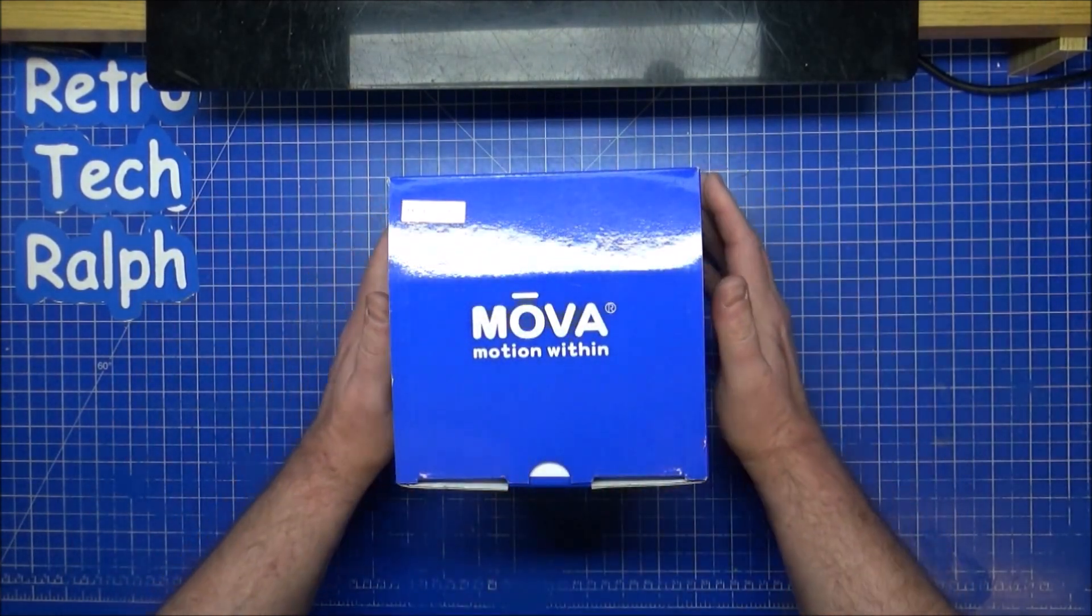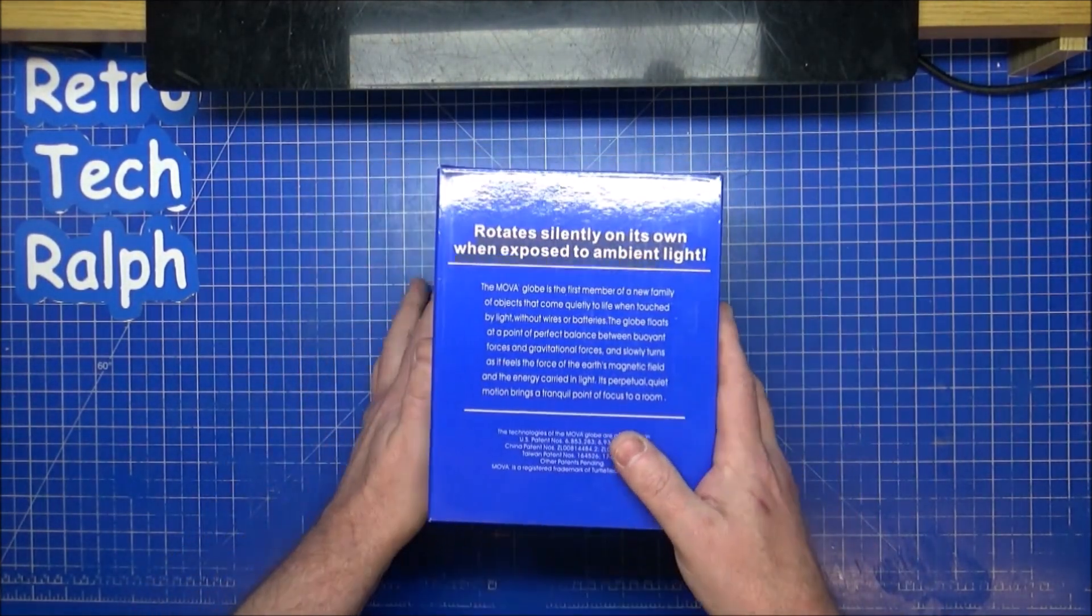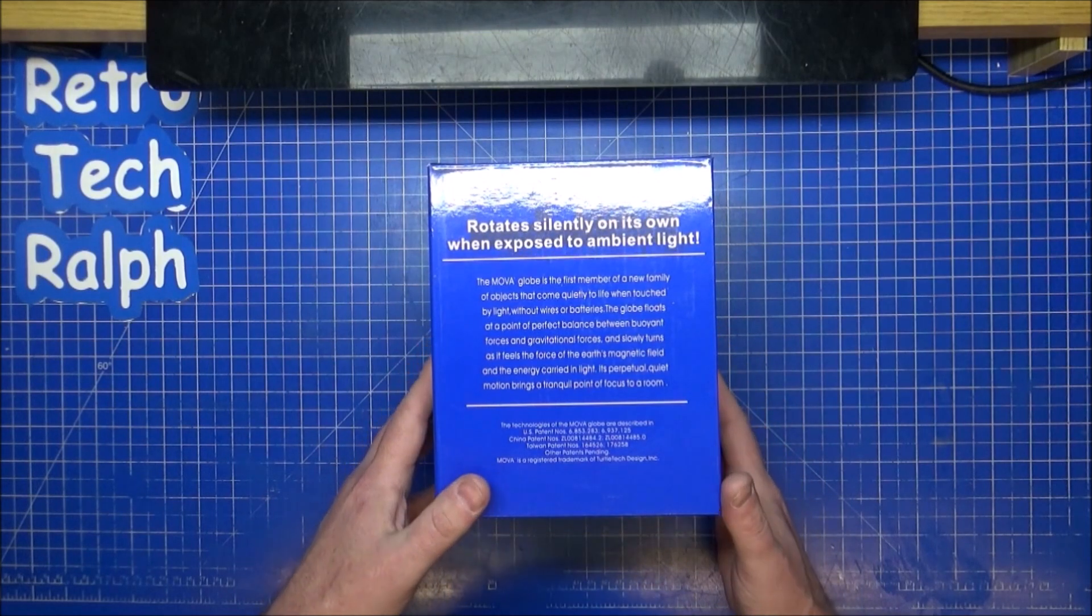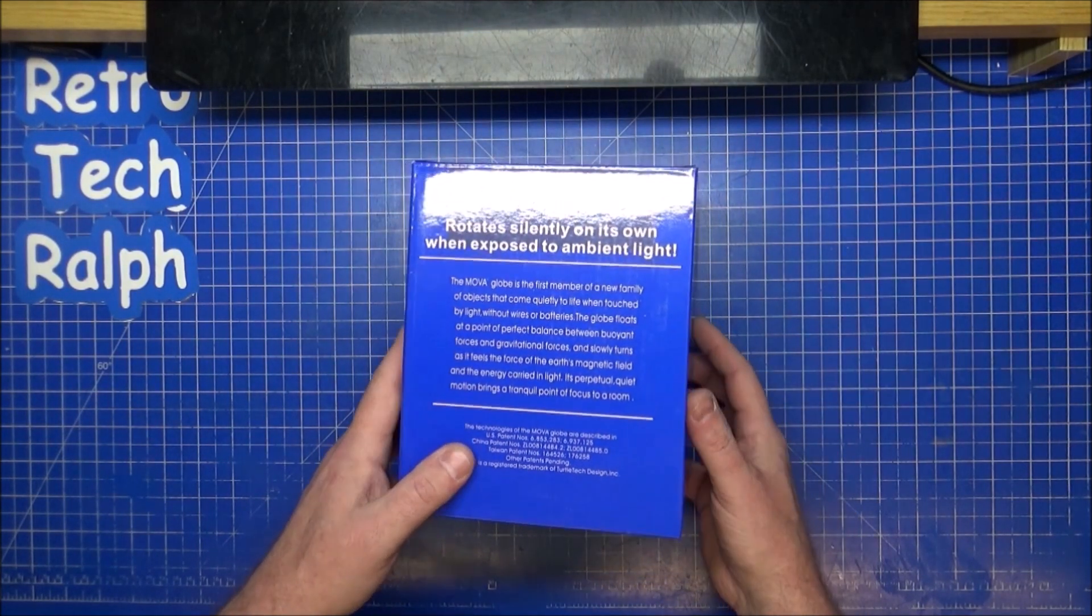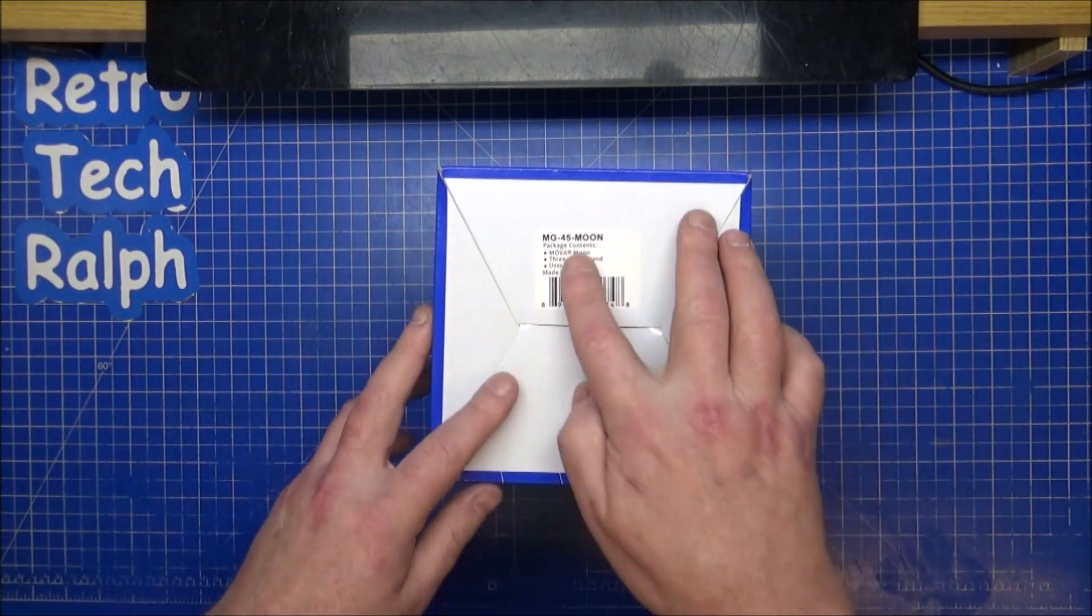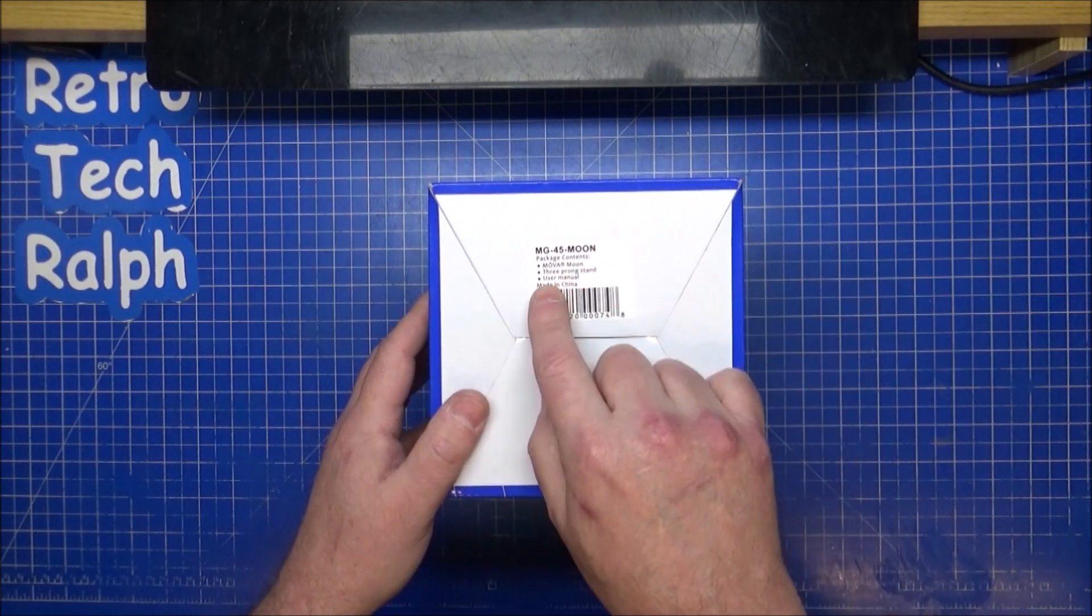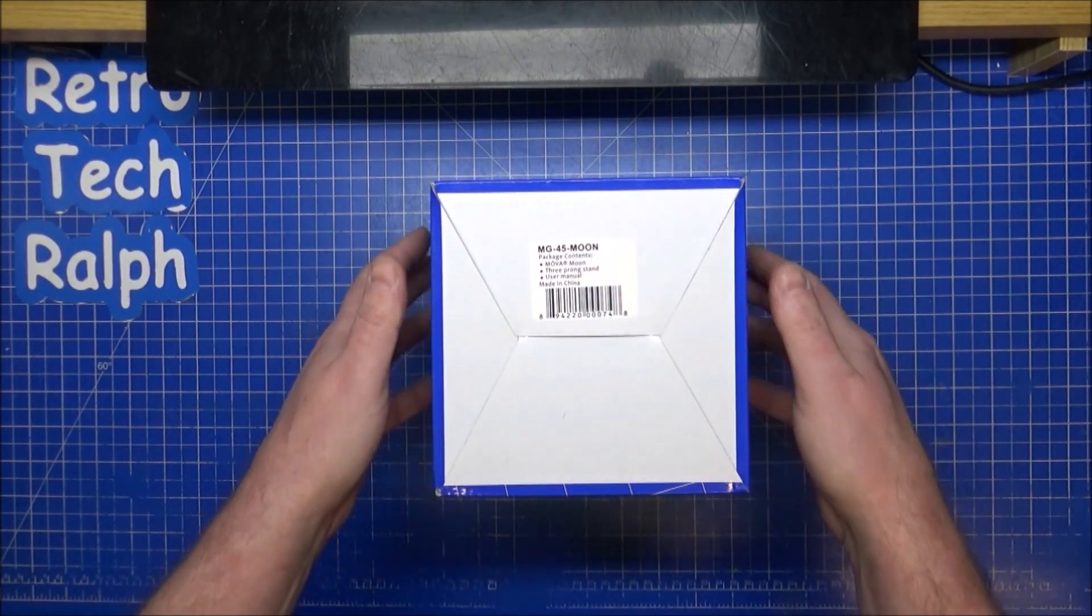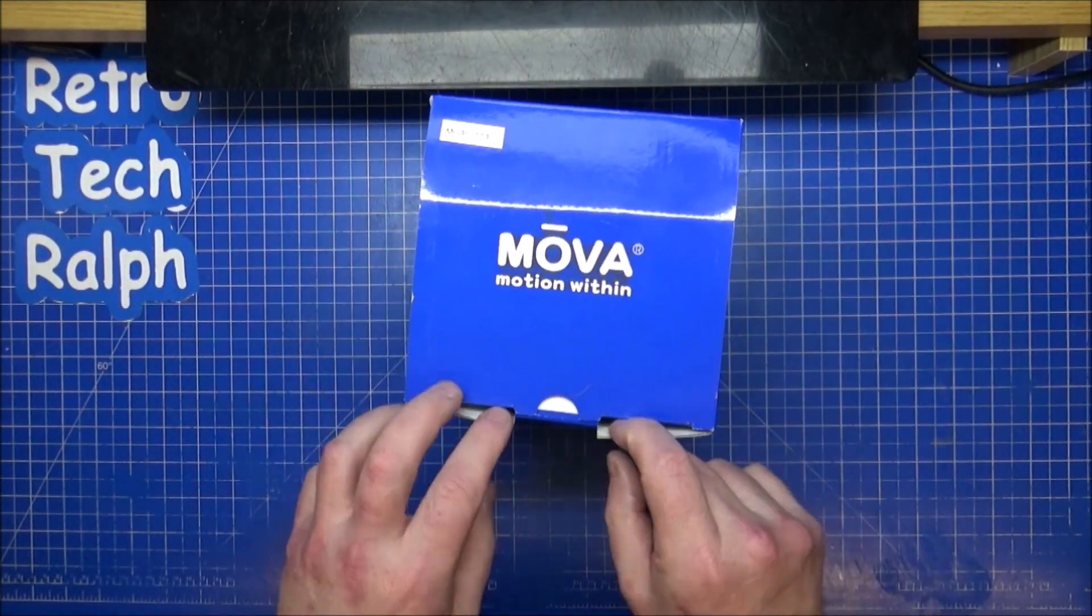I'll show you the box art and we'll get inside. There we go, first member of the new family of objects. This one's an MG45 because it's a 4.5 inch moon. Package consists of a moon, three prong stand, manual, made in China. So let's get inside.